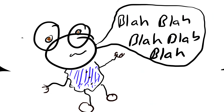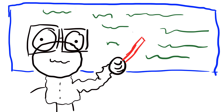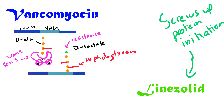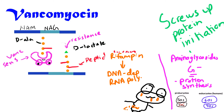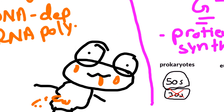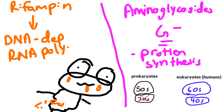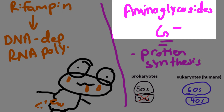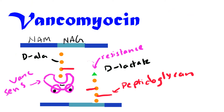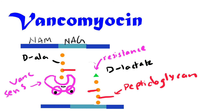You definitely want to get blood cultures and sensitivities along with other lab tests to see the organism growing, and do an echocardiogram to check for vegetations in the heart. Once you have that, treat with a combination of vancomycin with rifampin or aminoglycosides initially while waiting for sensitivities. Rifampin inhibits DNA-dependent RNA polymerase — specifically the bacterial RNA polymerase. It can also cause liver damage, so check LFTs, including AST and ALT. Vancomycin covers gram-positive organisms by inhibiting D-Ala–D-Ala and preventing cell wall synthesis.